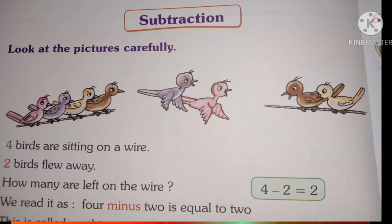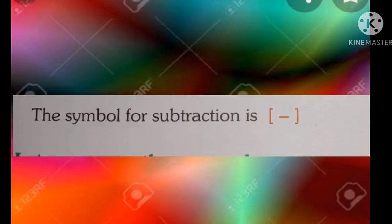How many birds are remaining? I will show you — 2 birds have left. Count the remaining birds: 1, 2. This is how subtraction works.